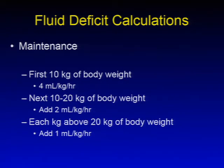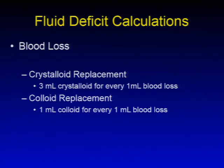Fluid deficit calculations are done as follows. For maintenance, take the first 10 kilograms of body weight and give 4 mL per kilogram per hour, then for the next 10 to 20 kilograms add 2 mL per kilogram per hour — this gives maintenance fluids. For blood loss, crystalloid replacement uses 3 mL of crystalloid such as lactated ringers or normal saline for every 1 mL of blood loss. For colloid replacement, use 1 mL of colloid for every 1 mL of blood loss.